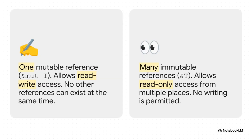The enforcer of these rules is the legendary borrow checker. It lives inside the compiler and has one single, non-negotiable law. You have two choices: you can have one writer — a mutable reference that can change the data — or you can have many readers — lots of immutable references that can look at it. But you can never, ever have both at the same time. This one simple rule, checked before your code even runs, makes data races literally impossible in Rust.